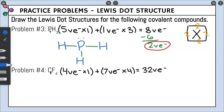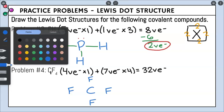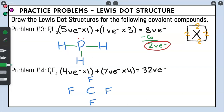Next we do our arrangement. The element we only have one of goes in the center — we only have one carbon, so carbon is the center. Putting our four fluorines around carbon like a box, each side of our box gets one fluorine. We then bond each surrounding fluorine to the center. That gives us four bonds, and one bond equals two valence electrons, so we used eight valence electrons total. That means we have 24 valence electrons left over.